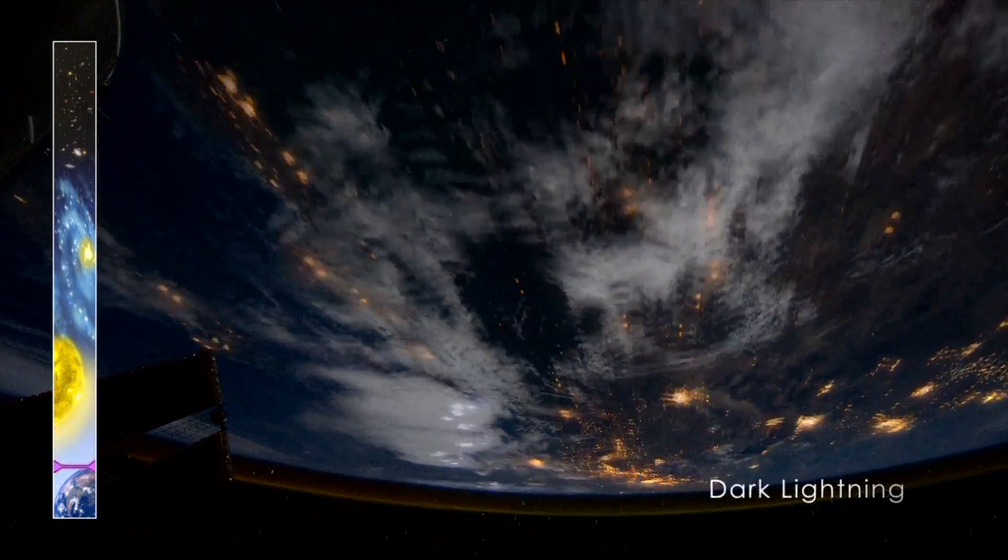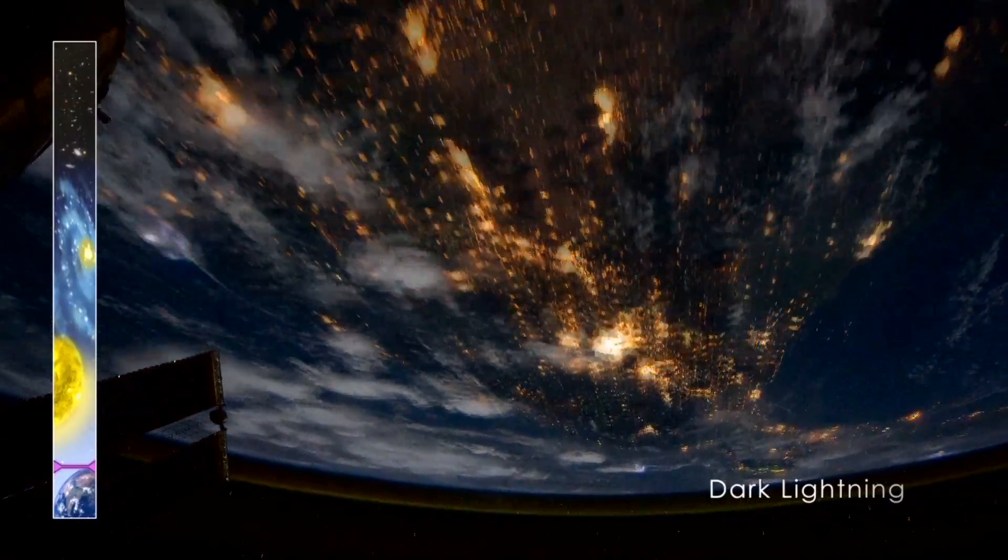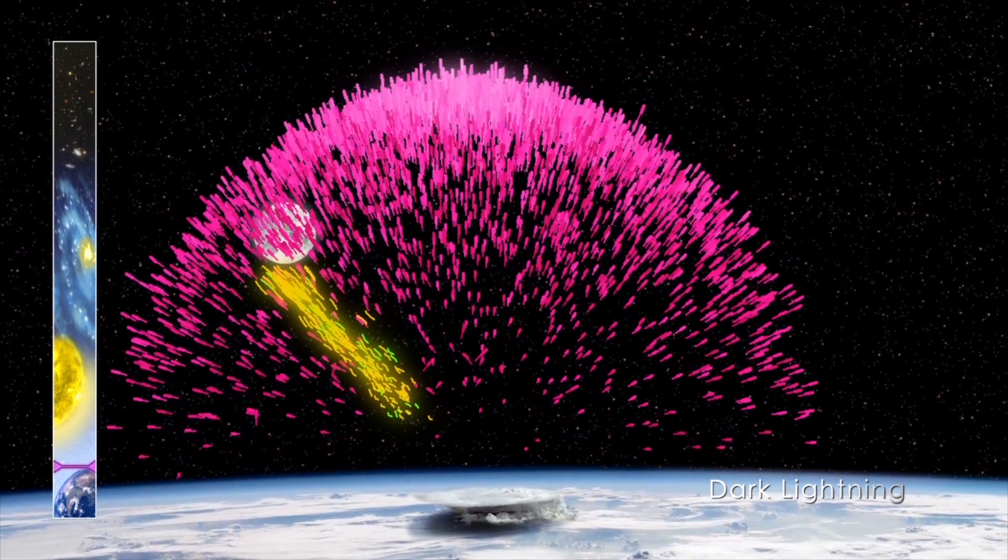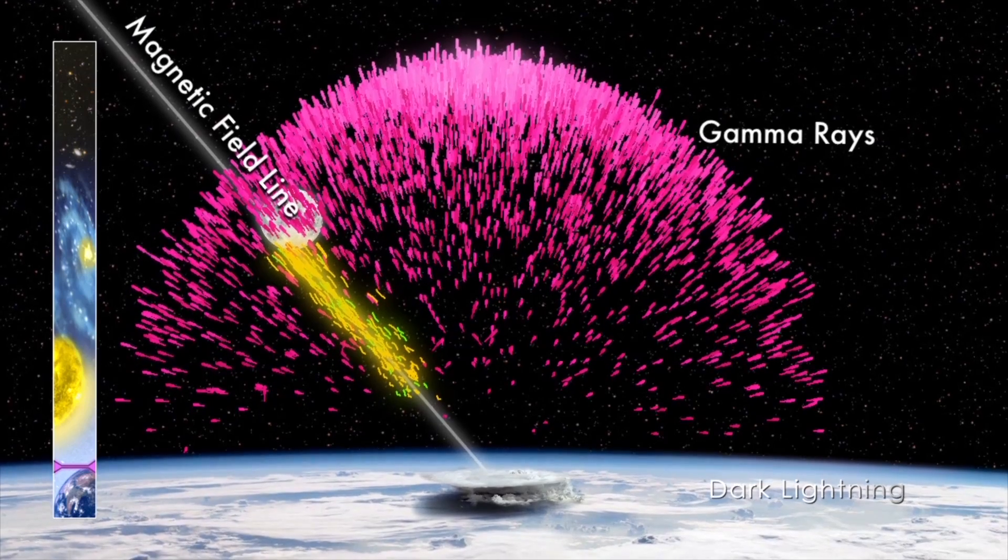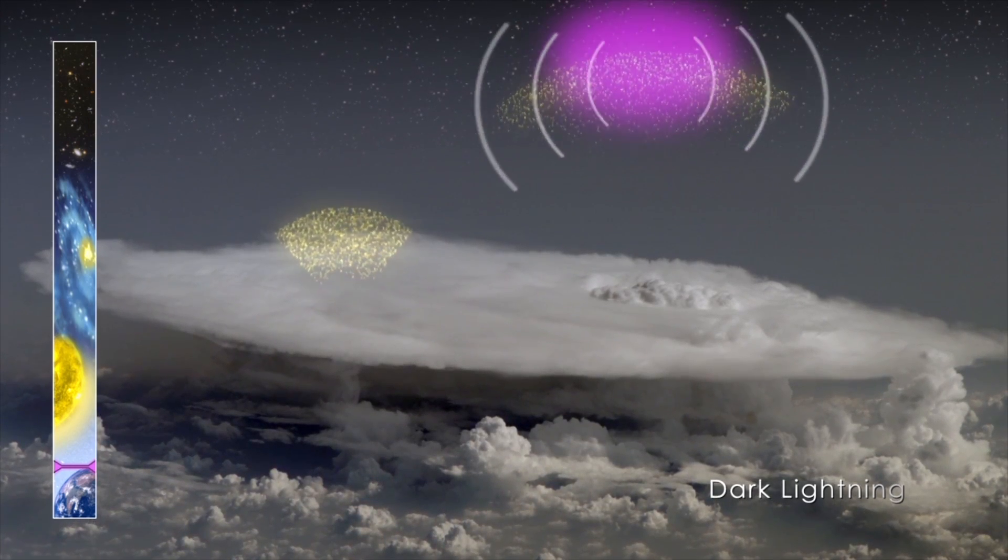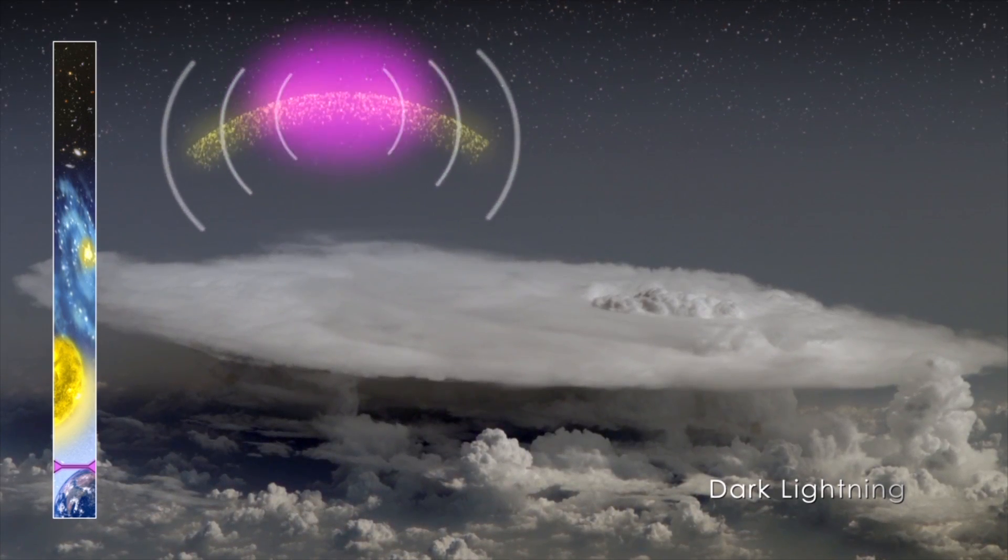New observations by NASA's Fermi Gamma-ray Space Telescope show that thunderstorms make antimatter. The process starts with a terrestrial gamma ray flash, or TGF, an intense pulse of gamma rays originating from thunderstorms. Scientists have discovered that radio signals, once thought to be produced by the lightning that triggers a TGF, are in fact broadcast by TGFs themselves.